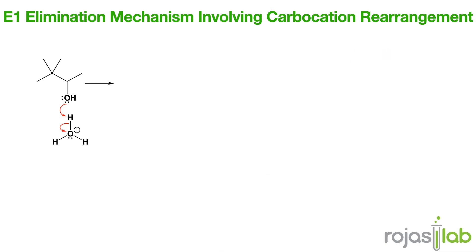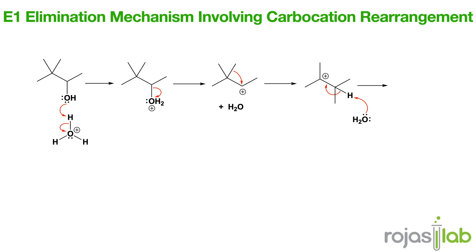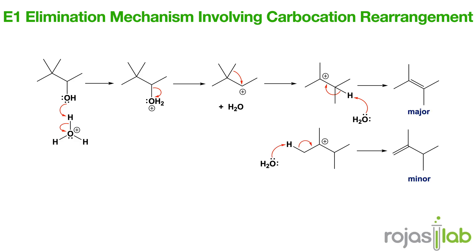Now let's take a look at E1 reactions with carbocation rearrangement. This follows the E1 mechanism, but a carbocation rearranges before elimination. The first step is leaving group departure to form a carbocation. Next, a hydride or methyl shift can occur, resulting in rearrangement. Then the base removes the beta hydrogen, forming our alkene. The major product arises from the more stable carbocation.